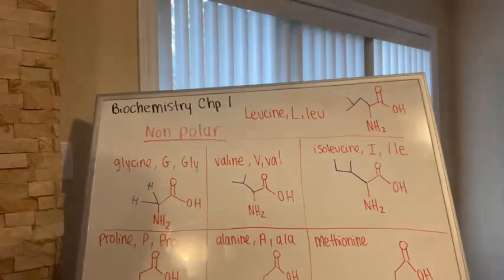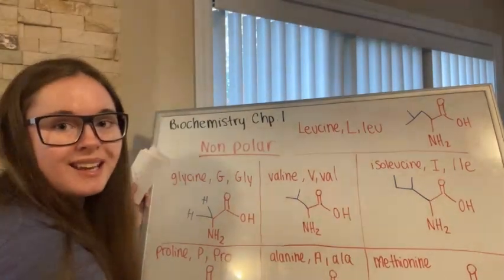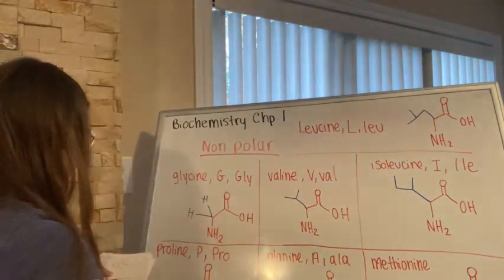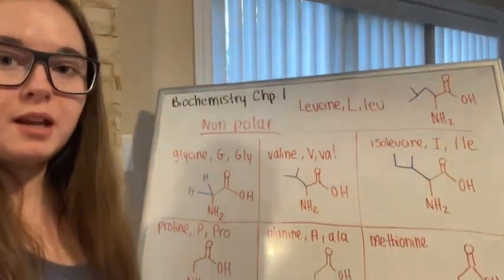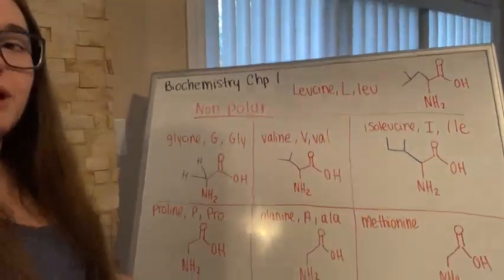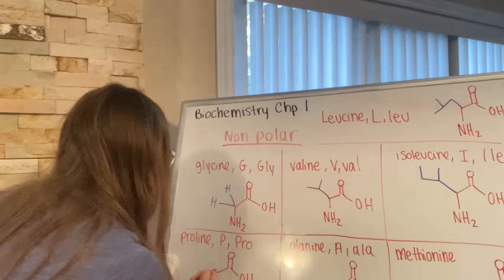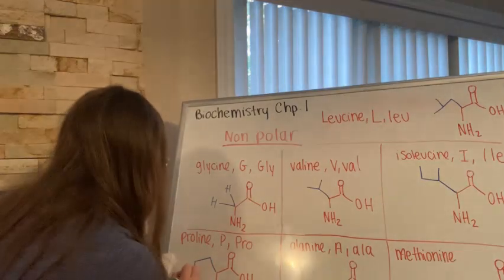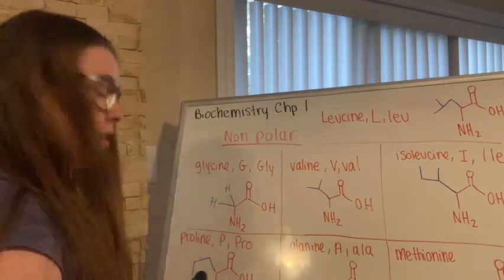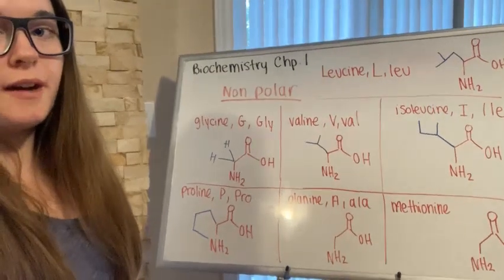Our next one is proline. Proline is also a very interesting one — it actually has a ring-like structure attached to it. Proline's one-letter abbreviation is P and its three-letter abbreviation is P-R-O.